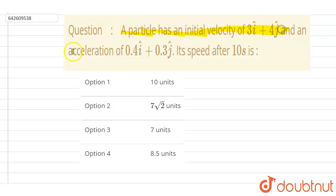Hello everyone. A particle has initial velocity of 3i cap plus 4j cap and an acceleration of 0.4i cap plus 0.3j cap. Its speed after 10 seconds is: